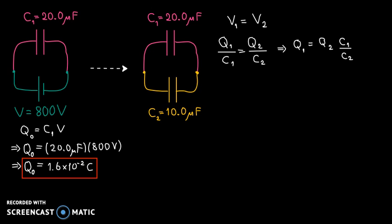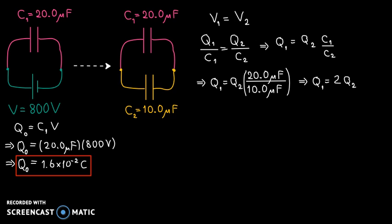Rearranging the equation and isolating Q1, we get Q1 equals Q2 times C1 divided by C2. The ratio C1 divided by C2 gives a factor of 2, so Q1 equals 2 times Q2. We need another equation. We also know that Q1 and Q2 should add up to the original charge Q0, so Q1 plus Q2 equals Q0, which we already calculated.